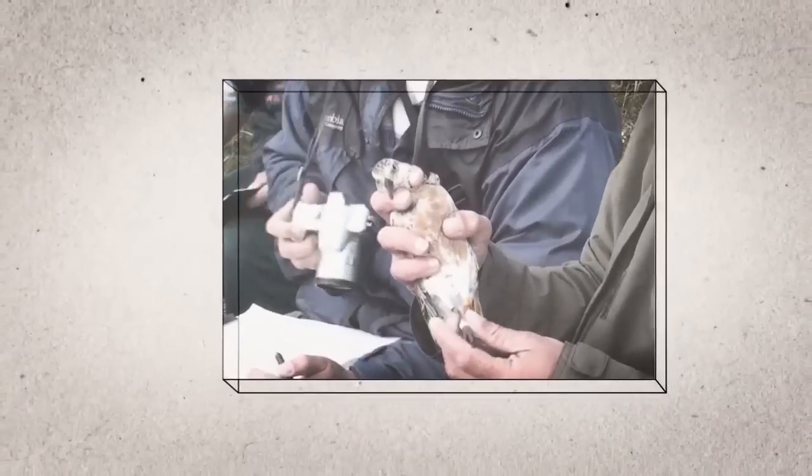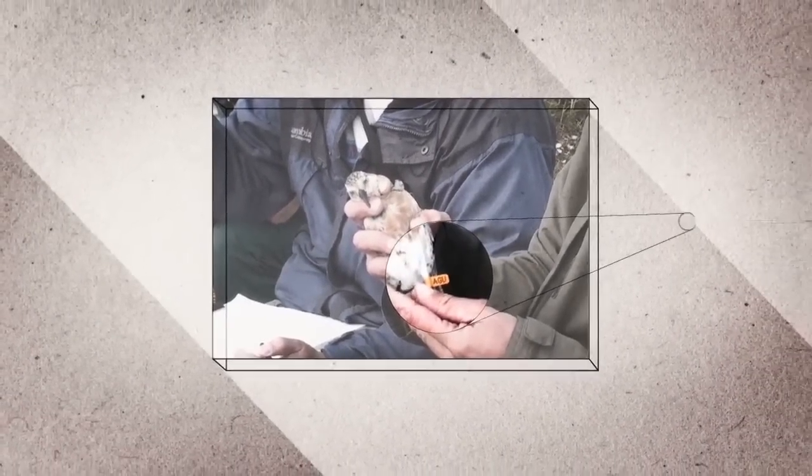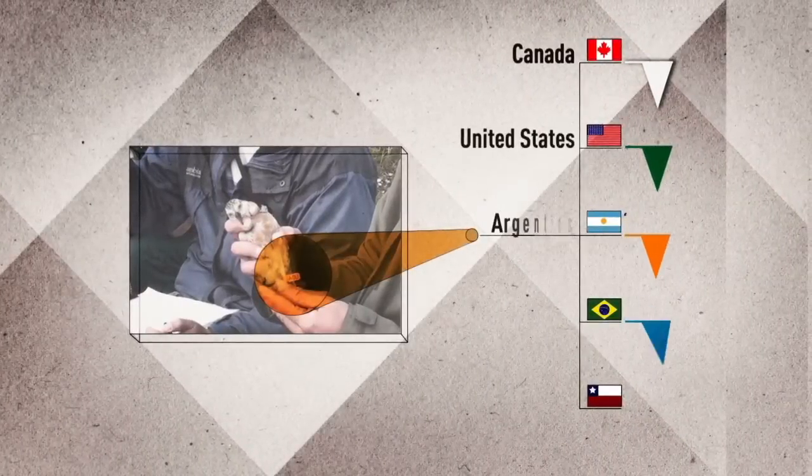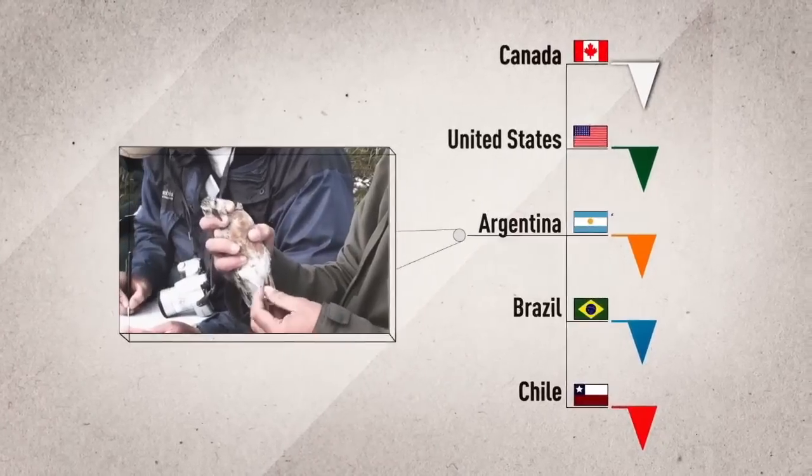The flag's color helps to identify the location of the initial capture. White for Canada, green for the United States, and orange for Argentina. In the future, other researchers will be able to collect data from the Red Knot Rufa without having to recapture them.